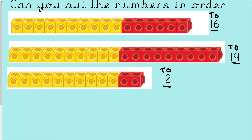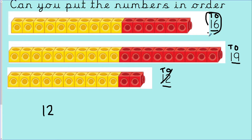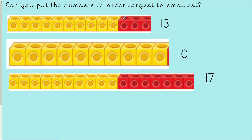We're looking for the smallest number first. All three numbers have one set of 10, so we move on to the ones column: we've got 6, 9, and 2. Which number is smallest — 6, 9, or 2? Excellent — 2. So our smallest number is 12. Now comparing 16 and 19, both have the same number of tens, so we look at ones: 6 and 9. Which is smaller? Excellent — 6. So 16 is next, and we are left with 19 as our largest. Ordered from smallest to largest: 12, 16, and 19.